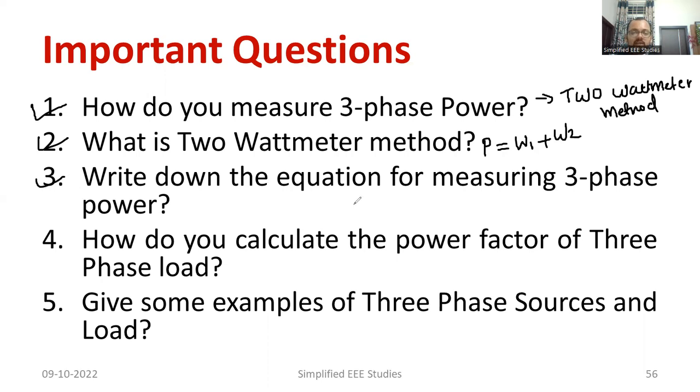Write down the equation for measuring three phase power. You can write in two ways. The first way, in terms of line quantity, the three phase power can be written as root 3 into VL, IL, cos phi or in terms of phase quantity, 3 into V phase into I phase into cos phi, where cos phi is known as power factor.